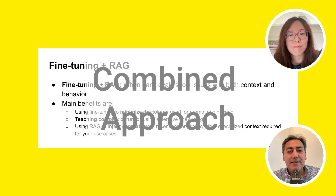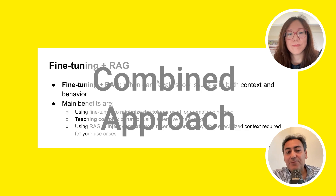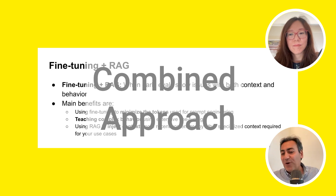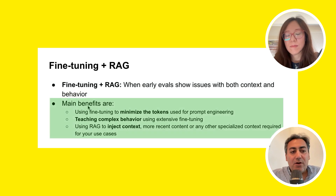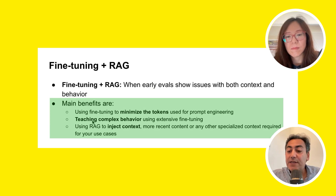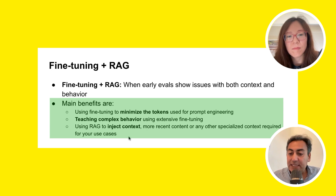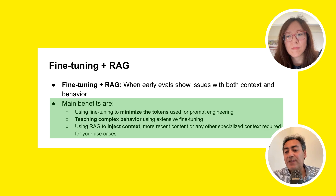The last but not least is when you actually use fine-tuning and RAG together. Sometimes when you evaluate, both the context and the behavior are wrong. If there is a use case where both have issues, the approach is to combine these two methods. By doing fine-tuning, you minimize the number of tokens and teach complex behavior to the LLM. And by using RAG, you inject extra context into the prompt, which improves accuracy and performance.